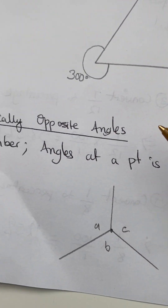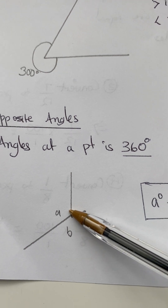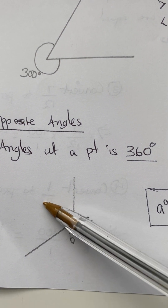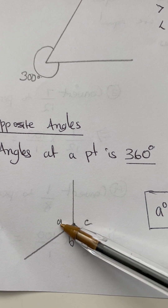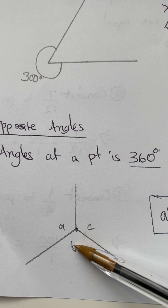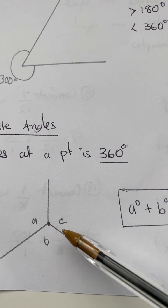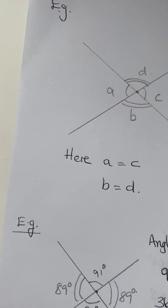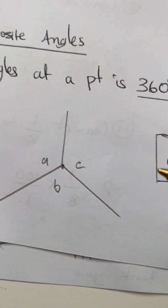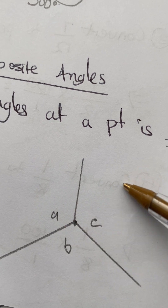Now let's look at vertically opposite angles. We know the angle at a point is 360 degrees. If you have multiple angles at a point — say angles A, B, and C — they all add up to 360. Here the point is divided into three portions, and those three angles should add up to 360.